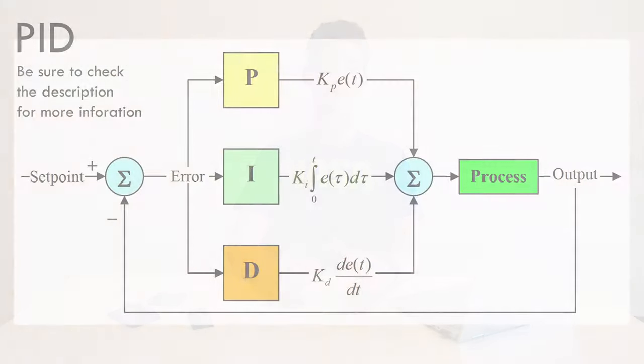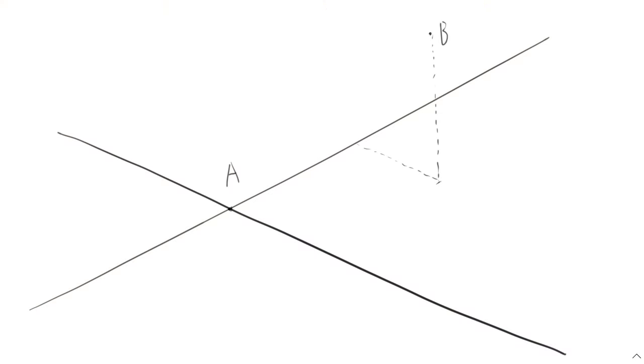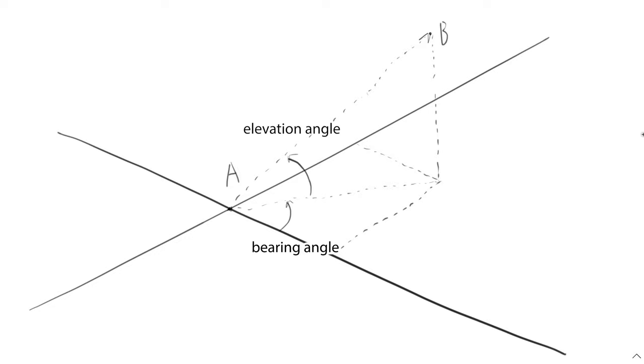Now after we have a good estimation of the computer state, we can use it to control the airplane. We use what's called the PID algorithm, which enables us to control the airplane's angle in three axes. We also want to control the airplane's position, and to do that I wrote a simple function that takes two points of the plane. After that we can pass it to the PID algorithm, thus controlling the location of the airplane.